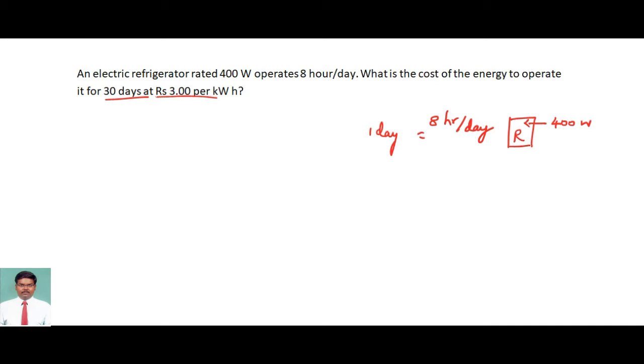Now we write the given things. The power is given by 400 watts, and then the time is equal to 8 hours a day. So the energy formula: